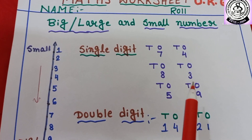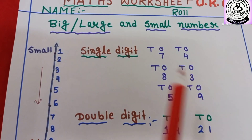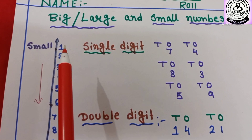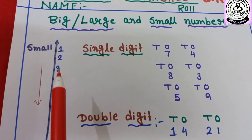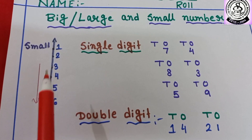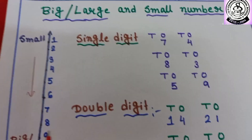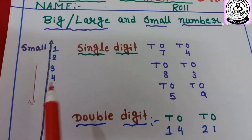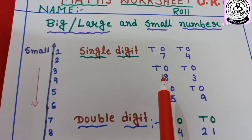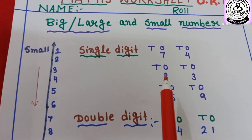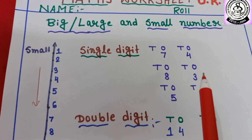Then I have written eight and three. So, which one is small number — eight or three? Counting: one, two, three, then four, five, six, seven, eight. So, three is smaller than eight and eight is bigger than three. You have to circle it.